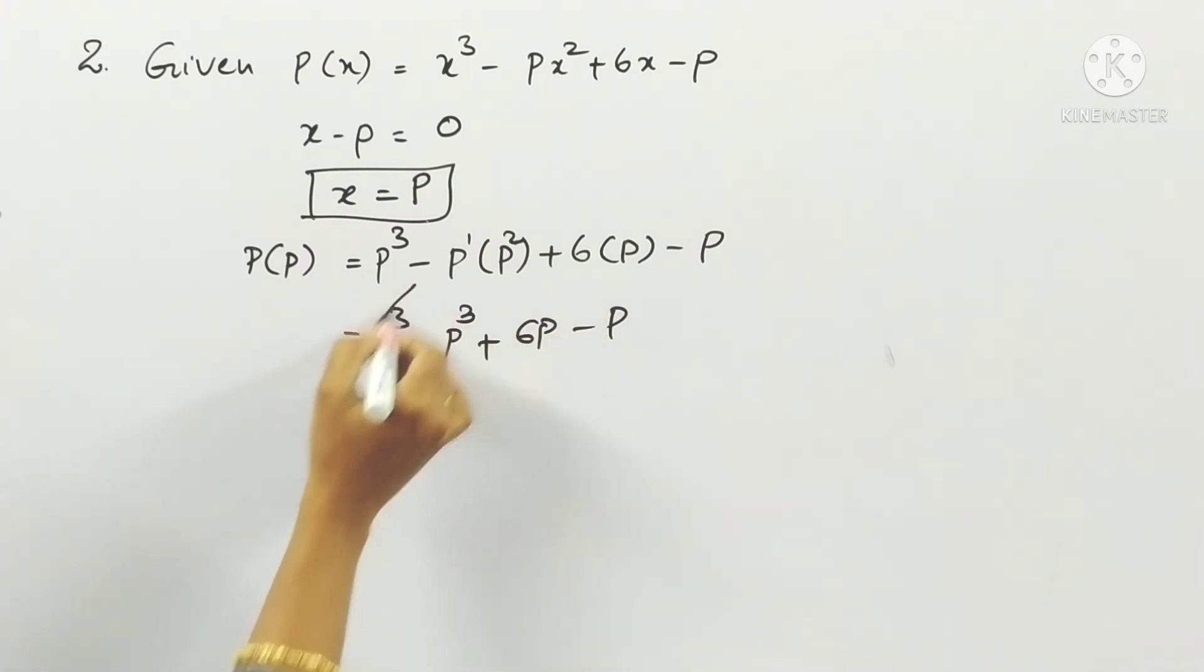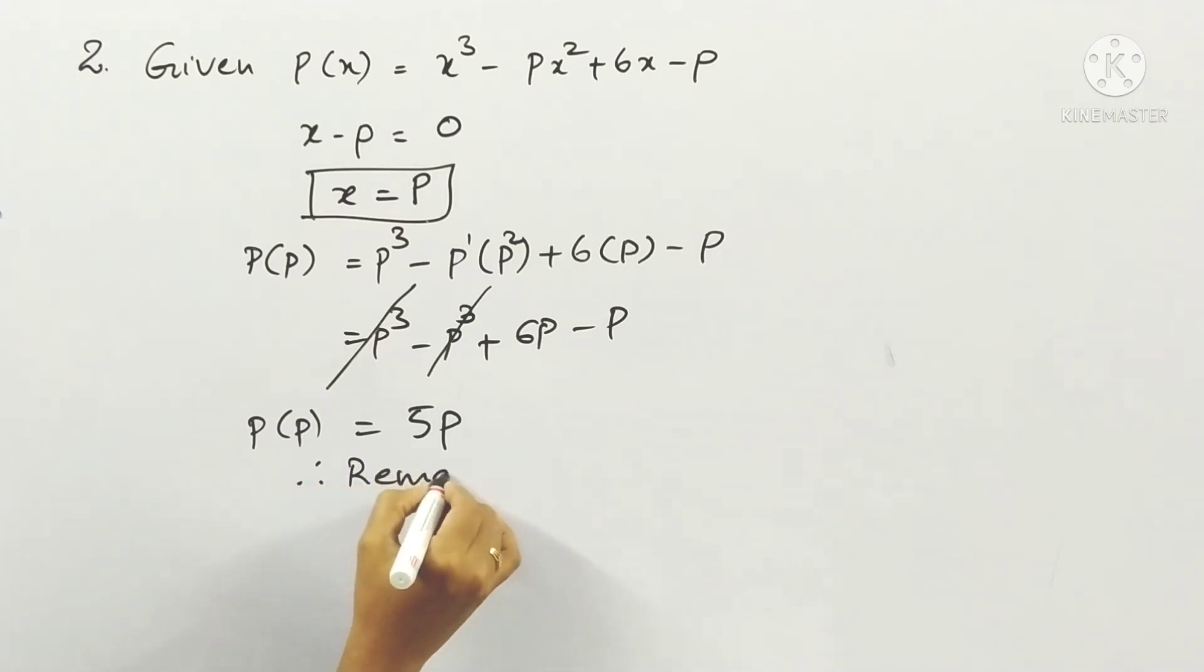Minus p. p³ will be subtracted, which is 0, so cancel that. Now 6p's are there. If we subtract 1p we'll get 5p's. So what is the remainder here? 5p. Therefore, remainder is equal to 5p.